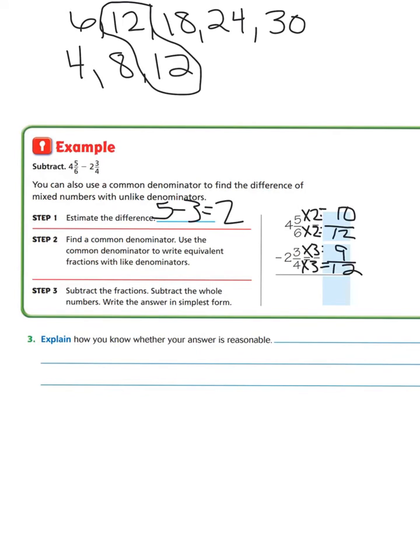Our next step says to subtract the fractions. We know that 10 minus 9 equals 1. Our denominator does not change since we're subtracting fractions. Then subtract the whole numbers and write the answer in simplest form. Our whole numbers were 4 minus 2, and that would be 2 and 1/12. Now explain how you know whether your answer is reasonable. We know our answer is reasonable because when we look at our estimated number of 2, our estimate equals 2, and our answer is 2 and 1/12, which is very close to 2. So we know our answer is reasonable.